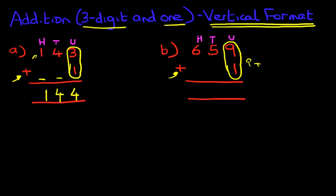We've now got nine plus one. Nine plus one is — you know this from your number bonds — it's ten. How do we write ten? One here and zero here. Now we're going to add the tens. We've got five here, nothing here, but we have one carried over here — this one is now part of the tens. That's why it's very important to write these down in nice, neat columns. Five plus one is six. And lastly we've got six in the hundreds; nothing adds to six, this remains as it is. Six hundred and fifty-nine plus one is six hundred and sixty.